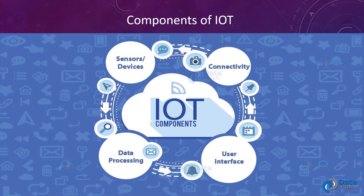Basically in IoT there are four components: sensors and devices, connectivity, user interface, and data processing. Just like human beings have sensors — your sense of smell, touch, sight, hearing — likewise electronic devices have sensors as well.